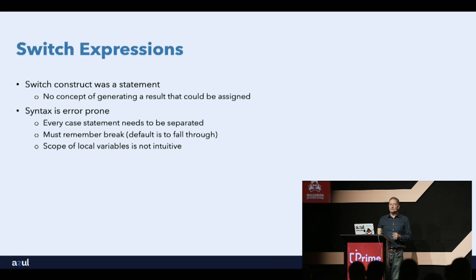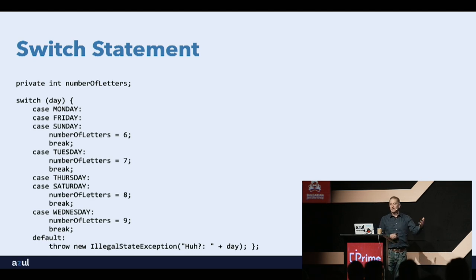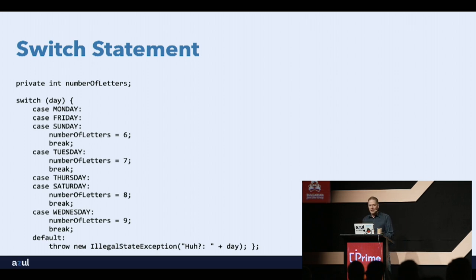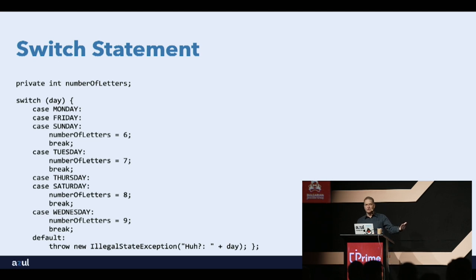Some scoping around local variables is also not very intuitive. A typical use of switch is switching on a day of the week to assign a value — say, the number of letters. With a local variable the compiler catches a forgotten assignment, but with an instance field that has a default value, you can get hard-to-find bugs where it ends up being zero when you expected something else.